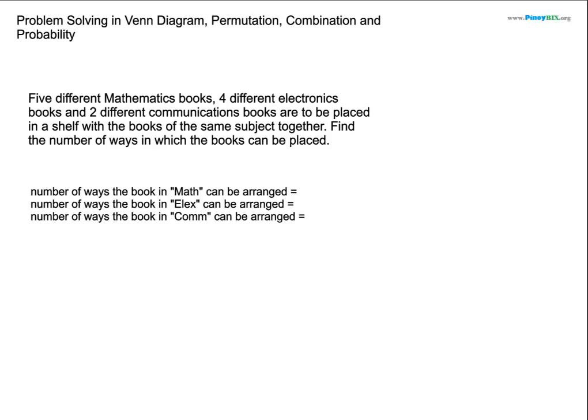First, let us find the number of ways each can be arranged. For the number of ways the book in math can be arranged, you can use the concept of permutation. Since mayroon silang sequence, permutations yung ating ginamit at lahat sila ginamit. So for the number of ways the book in math can be arranged, we have five factorial.